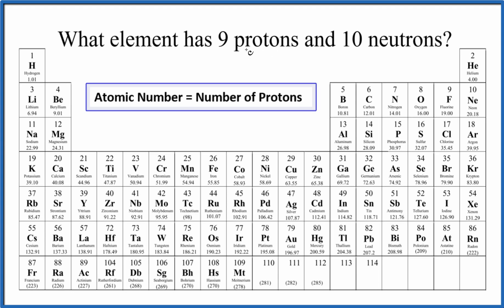Here's how you can tell which element has nine protons and ten neutrons. And the key to understanding this is to know that the atomic number of an element equals the number of protons.